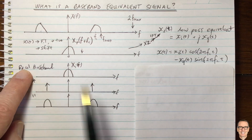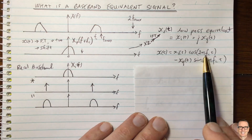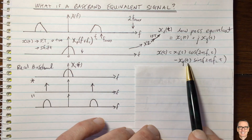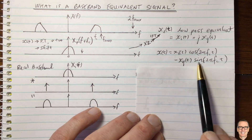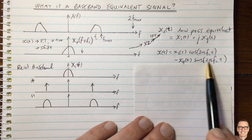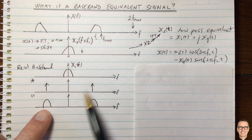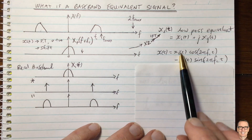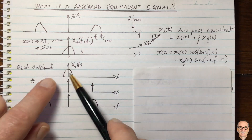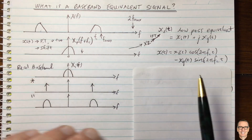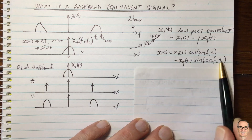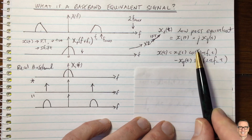Something similar happens with complex baseband: you simply have XQ(t) multiplied by the sine function. The sine function also looks like two delta functions in the frequency domain, so when you multiply you get the same shifting. The addition of the in-phase (cos) and quadrature (sine) terms gives the overall passband signal — this is exactly how a QAM signal is generated.